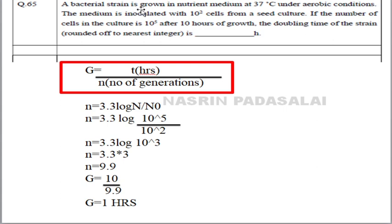Next question: a bacterial strain is grown in a nutrient medium at 37°C under aerobic conditions. The medium is inoculated with 10² cells from a seed culture. The number of cells after 10 hours of growth is 10⁵. What is the doubling time of the strain, rounded to the nearest integer? The formula is G = T/N, where T is time in hours and N is the number of generations. T is given as 10 hours.